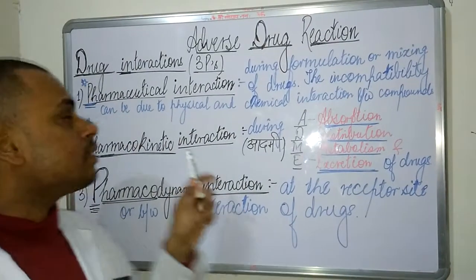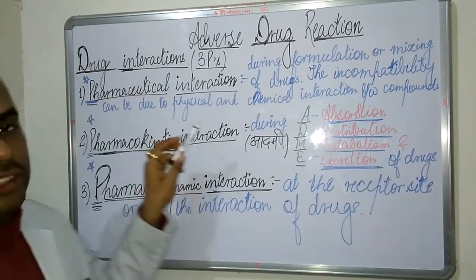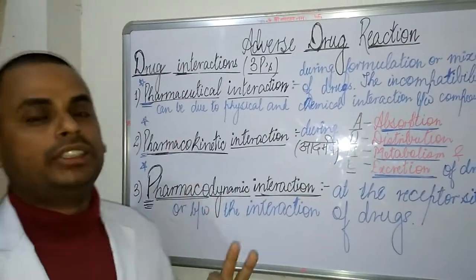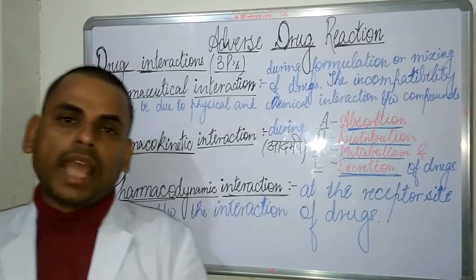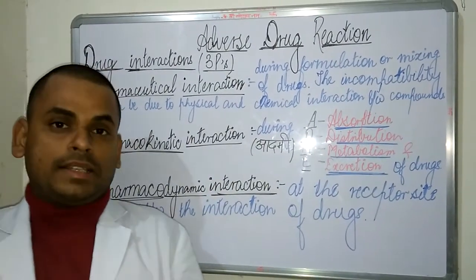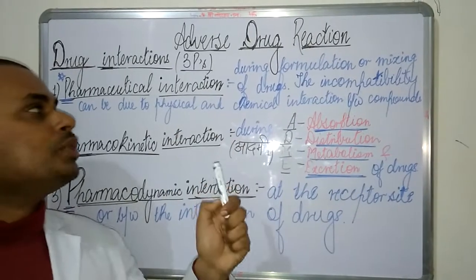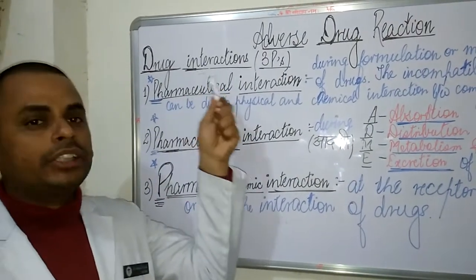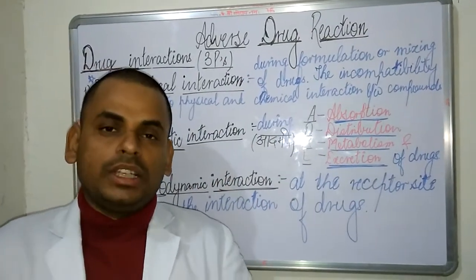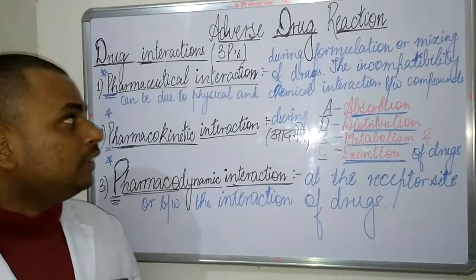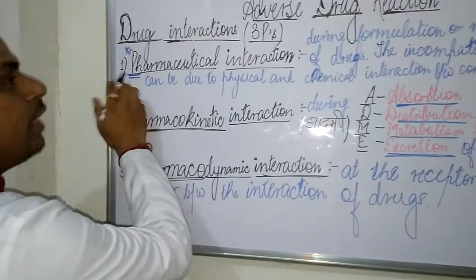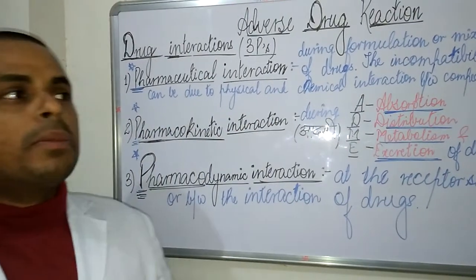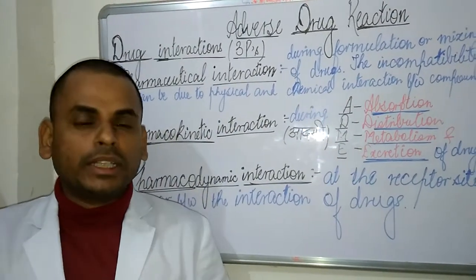I will be focusing particularly upon drug interactions. The adverse drug reactions that occur due to drug interactions can be better remembered if we just look at the three P's. The three P's correspond to the types of drug interactions which cause adverse drug reactions.